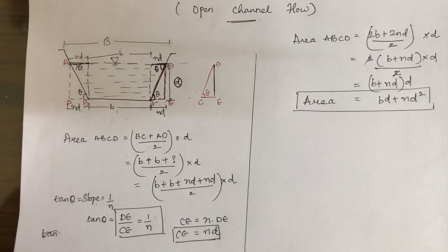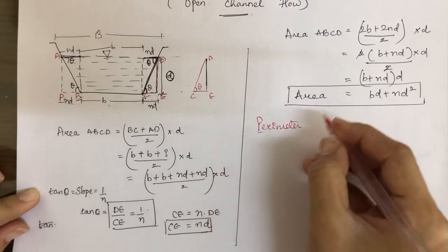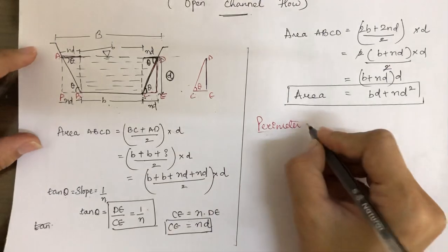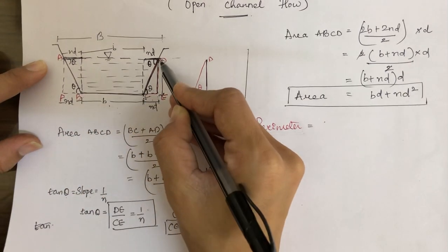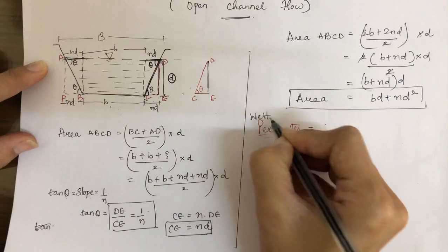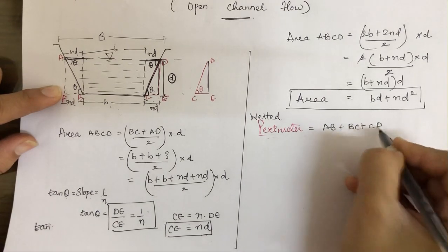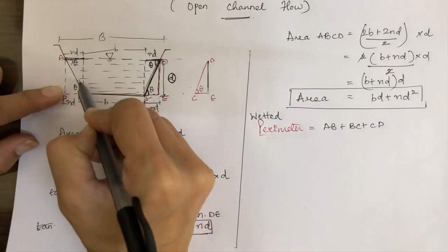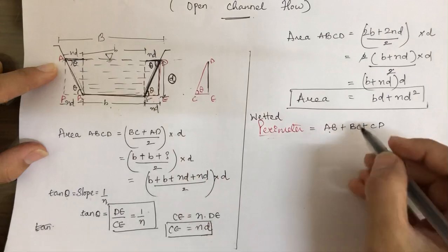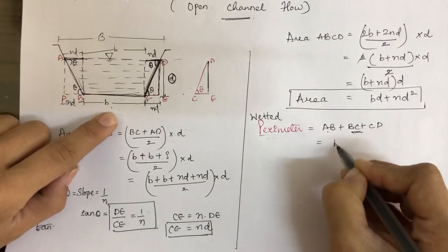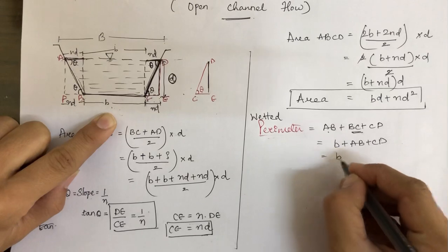Now we move to the second parameter: the wetted perimeter. The wetted perimeter equals AB + BC + CD. Here BC equals small b, and by symmetry AB equals CD, so the wetted perimeter equals b + 2·CD. We need to find the value of CD.